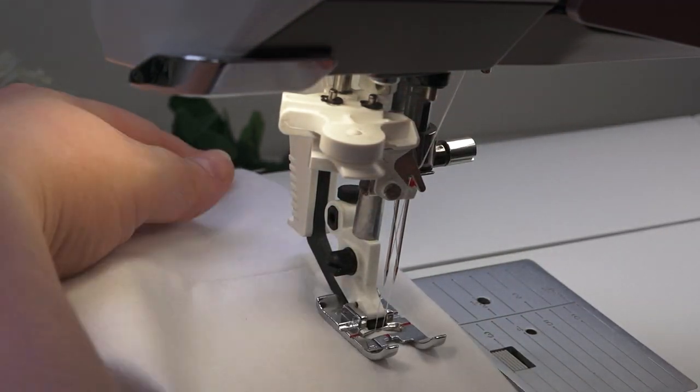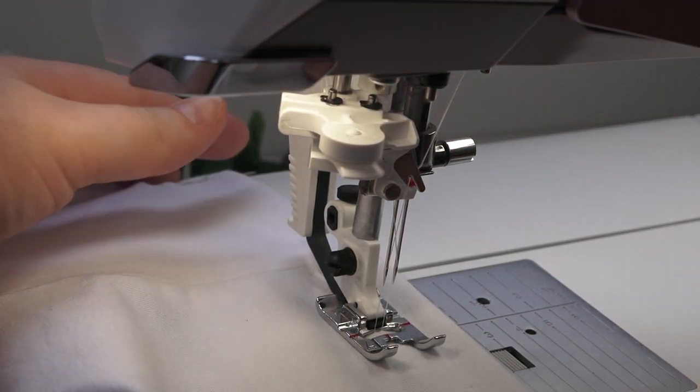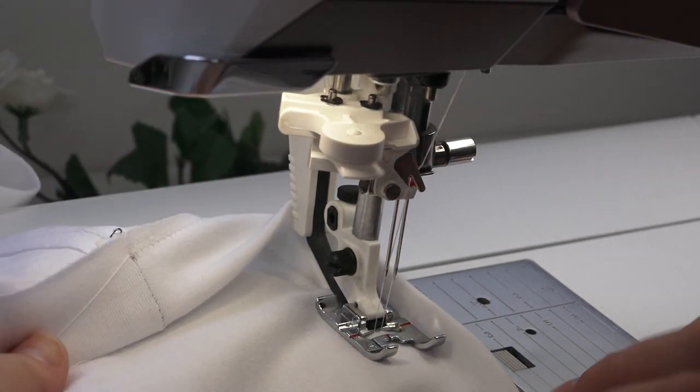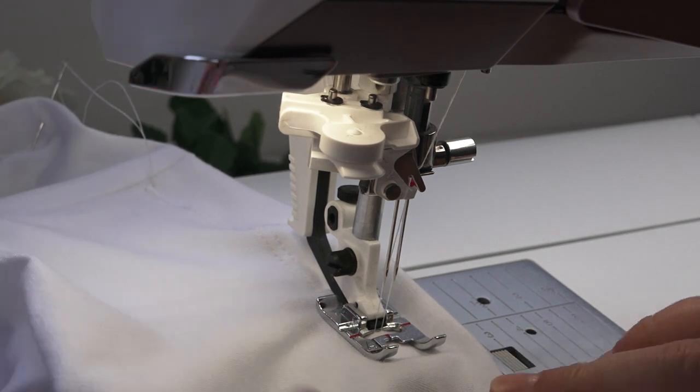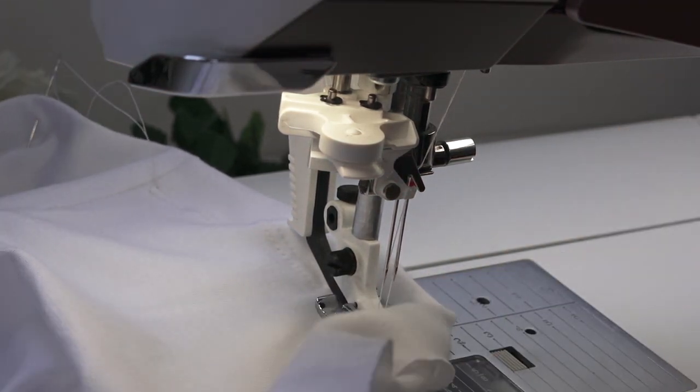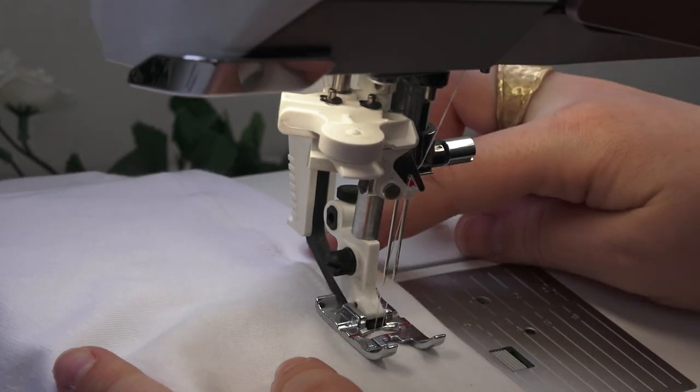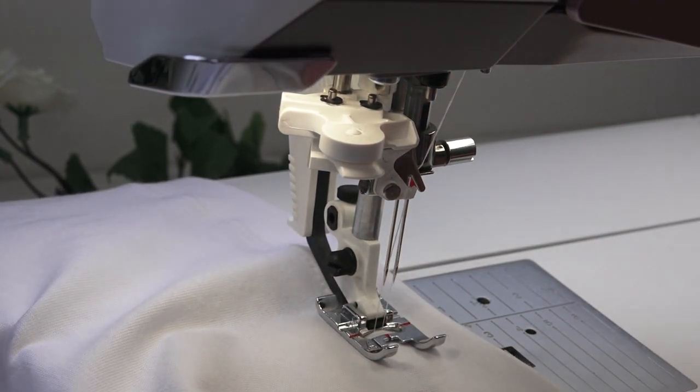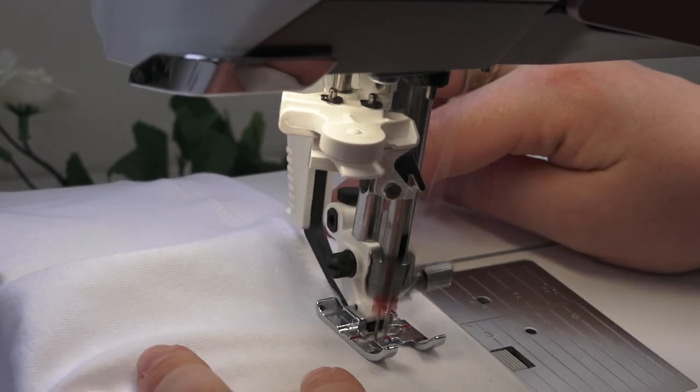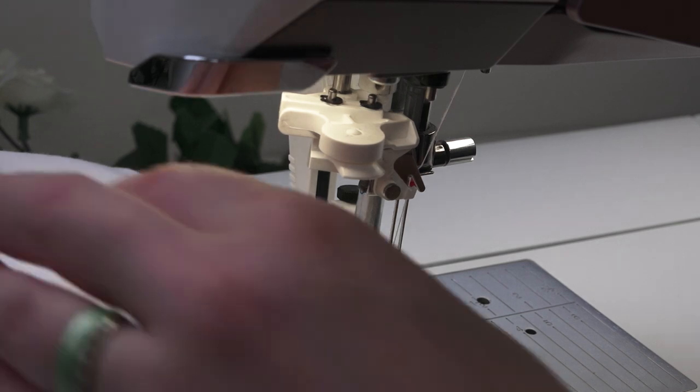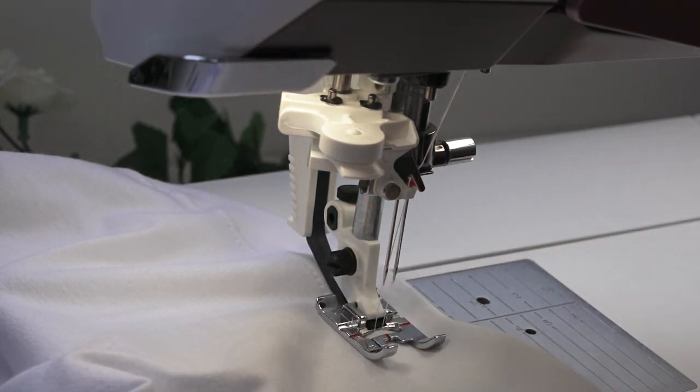Looking good! Just take your pins out as you go. The key is to just have it on the twin needle setting on your machine—it's sometimes a button or dial. Then it's just a straight stitch, and you can adjust the stitch length if you want as well.